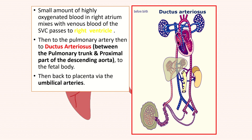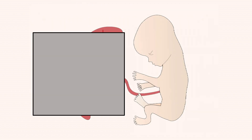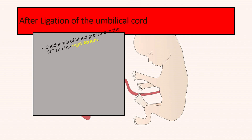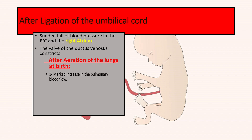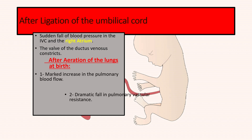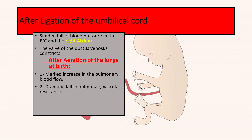After birth, following ligation of the umbilical cord, there is a sudden fall of blood pressure in the inferior vena cava and the right atrium. With the cry of the baby there is aeration of the lungs at the time of birth. At that time the walls of the ductus venosus are constricted. There is a marked increase in pulmonary blood flow and a dramatic fall in pulmonary vascular resistance.